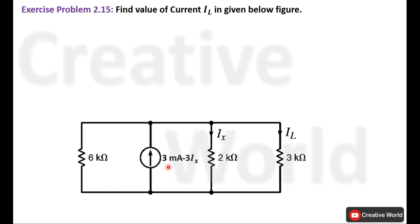This current source (3 mA minus 3ix) is connected across three parallel-connected resistances. In this circuit, we don't have the actual amount of the constant current source because it contains a variable, ix. The branch currents are also unknown, so first we will calculate the value of this branch current labeled as ix, so that we can calculate the actual total supplied current.